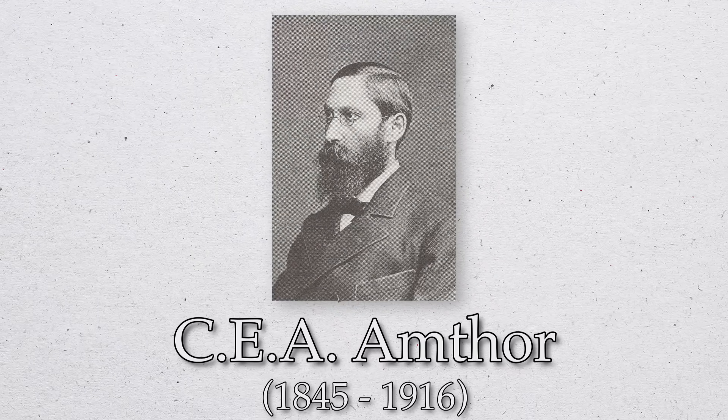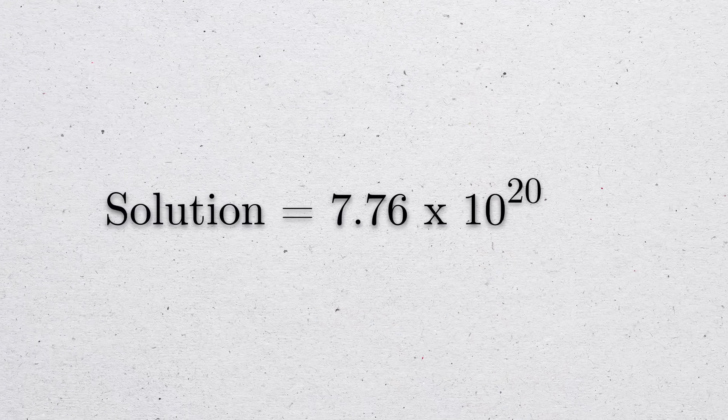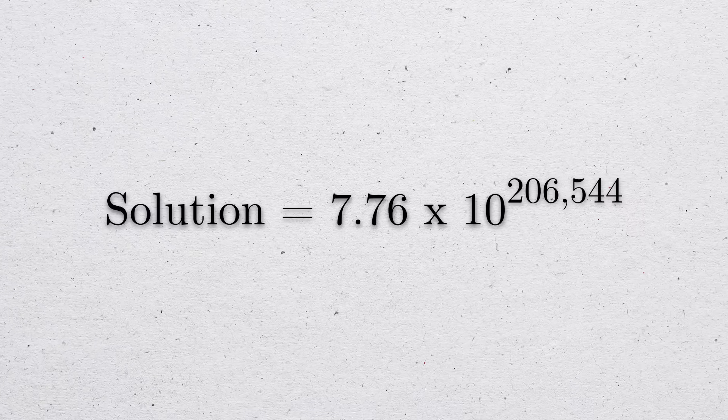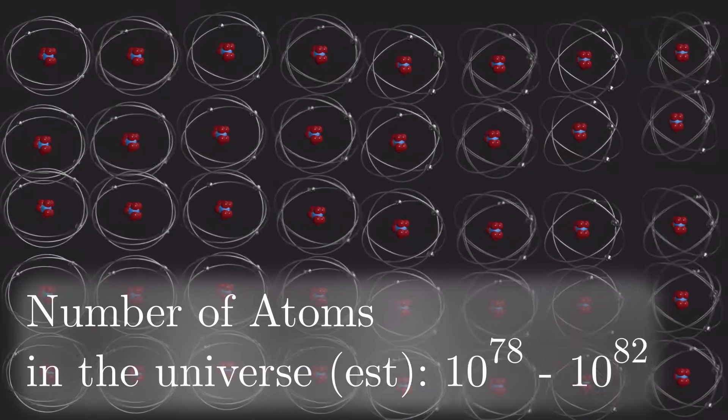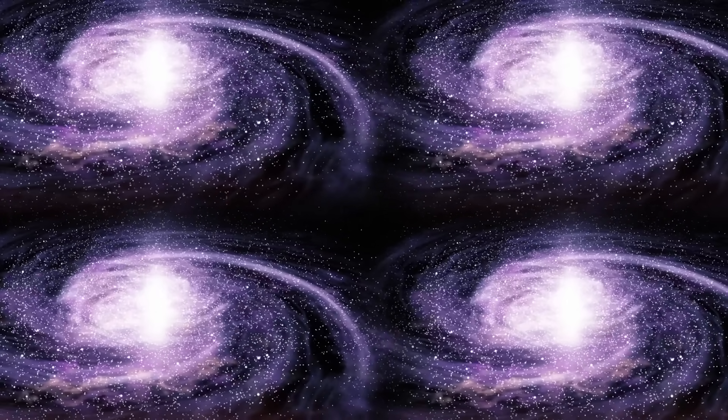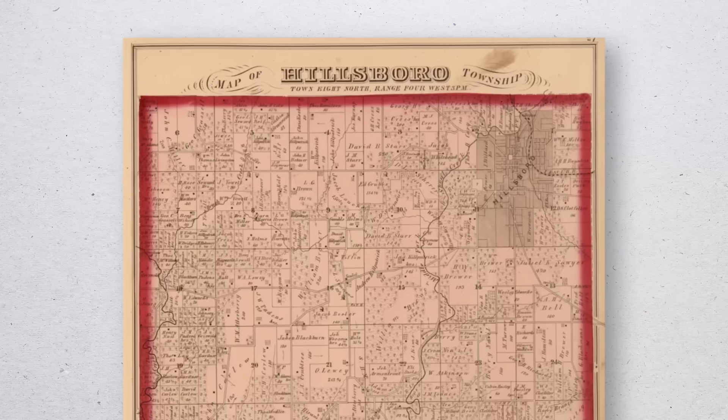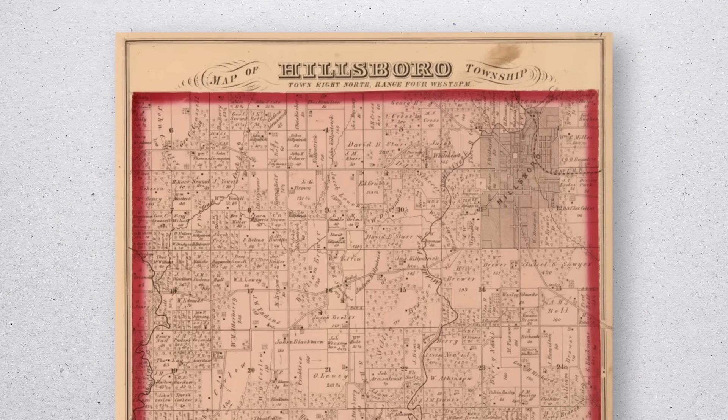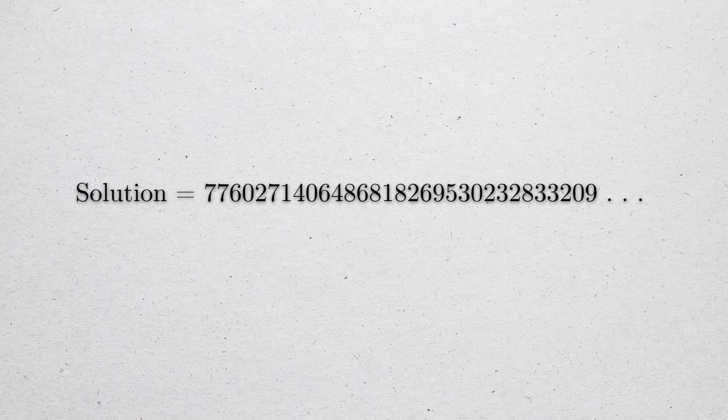So it took until 1880 for Karl Ernst August Amthor to work out that the solution starts with the numbers 776 and is 206,545 digits long. For comparison, the number of atoms in the known universe is a number that's about 80 digits long. If each one of those atoms turned into their own universe, then the total across all of these universes would be a number that's around 160 digits long. About 10 years after Amthor's calculation, a few members of the Hillsborough Mathematical Club of Hillsborough, Illinois spent four years to find the first 31 digits and the last 12 digits.